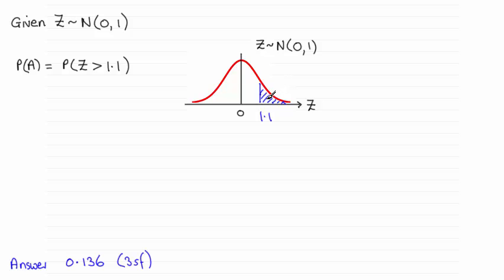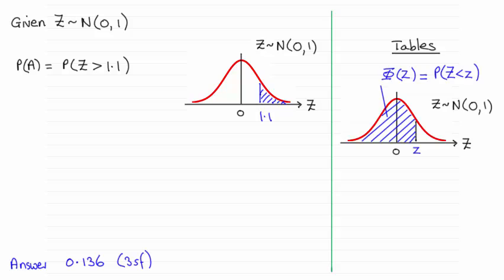Now when it comes to working out that probability, if we're using tables, then the standardised normal distribution tables just give us the probability of being less than a given value of Z, where Z is greater than 0.